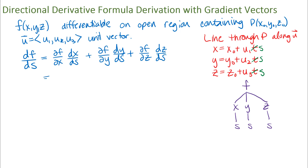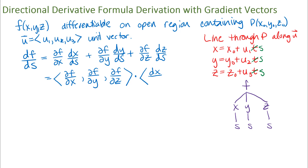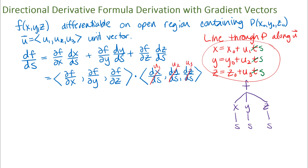We can actually write this as a dot product of two vectors. The first vector in the dot product is these partial derivatives of f with respect to x, y, and z. The second vector is where I've taken the derivative of x, y, and z with respect to s. From the parametric equations of the line, dx/ds equals u1, dy/ds equals u2, and dz/ds equals u3. So the second vector is really just our unit vector u that told us the direction we wanted to go.